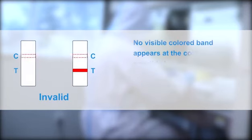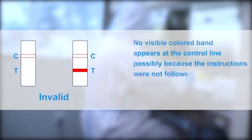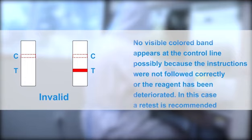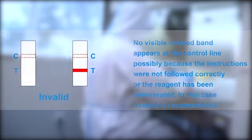Invalid results: No visible colored band appears at the control line, possibly because the instructions were not followed correctly or the reagent has been deteriorated. In this case, a retest is recommended.